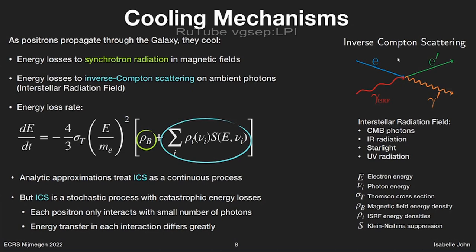Treating energy losses as continuous is fine for synchrotron radiation, because it essentially is a continuous process. But for inverse Compton scattering, this is actually different, because it is a very probabilistic process. There is only a small probability that an inverse Compton scattering interaction happens in a given period of time, and the energy losses can be quite catastrophic. If you take this stochasticity into account, you realize that the energy losses from inverse Compton scattering are very individual for each positron.